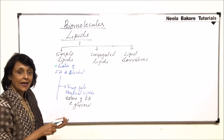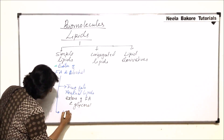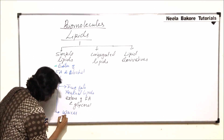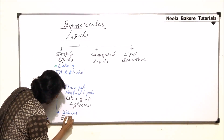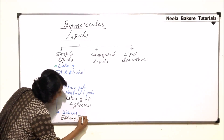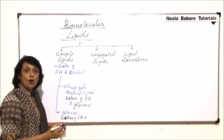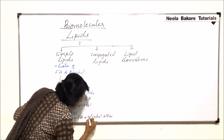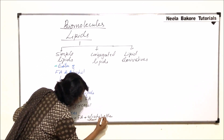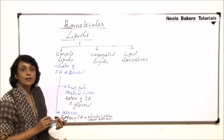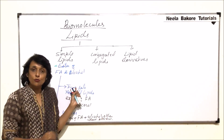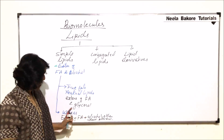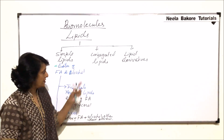The second category of simple lipids is waxes. Waxes are also esters — they are defined as esters of fatty acid and an alcohol other than glycerol. So if it is fatty acid and glycerol, those are called true fats or neutral fats. If it is fatty acid and an alcohol other than glycerol, then we keep them under the category of waxes.